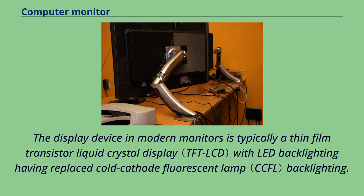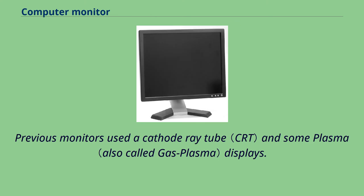The display device in modern monitors is typically a thin film transistor liquid crystal display with LED backlighting, having replaced cold cathode fluorescent lamp backlighting. Previous monitors used a cathode ray tube and some plasma displays.